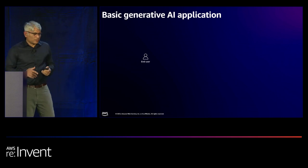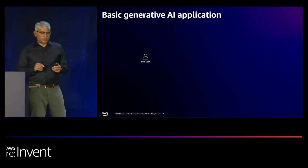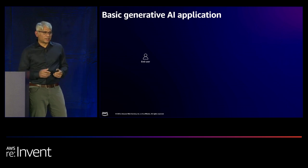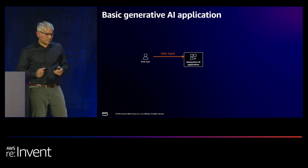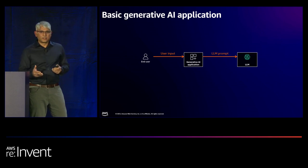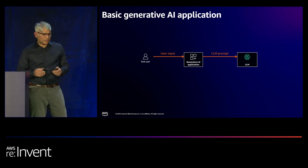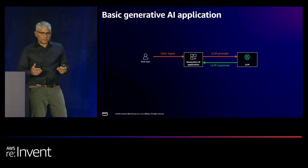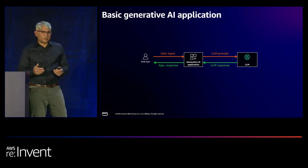Let's go through the architecture of a classic Gen AI application. Imagine you're building a chatbot. A user presents input to your Gen AI application, which converts that into a large language model prompt and provides it to the LLM. The LLM produces an inference response, and the application returns that response to the end user.